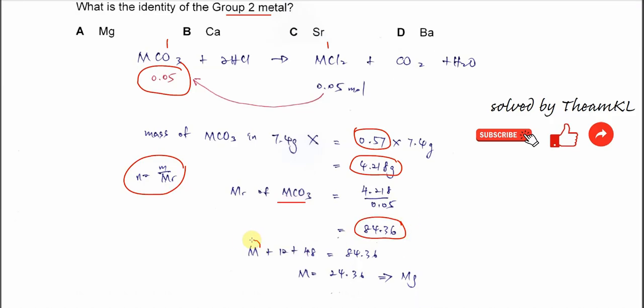Now we can get the Group 2 metal. We know that this Group 2 metal carbonate, its molar mass needs to be M. This is what we need to find, the molar mass of the Group 2 metal.